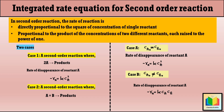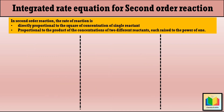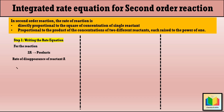Now let's go step by step and derive the equation. Step 1 is writing the rate equation. We consider the second order reaction 2A → products. The rate of disappearance of A is: -rA = -(1/V)(dNA/dt) = kCA²  ... (Equation 1).